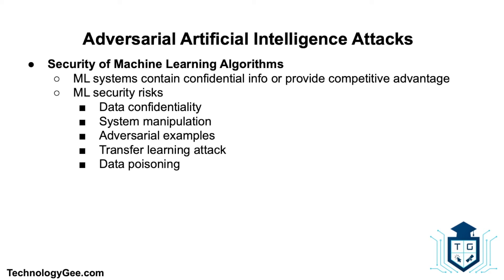The first risk is data confidentiality. Machine learning brings additional challenges to protecting confidential data since sensitive data is built into the model through training. In order to protect the system from this type of attack, it's necessary to build machine learning security protocols into the model from the beginning stages of the machine learning life cycle. Next is system manipulation — when a machine learning system continues learning and modifying its behavior while in operational use, it is said to be online.